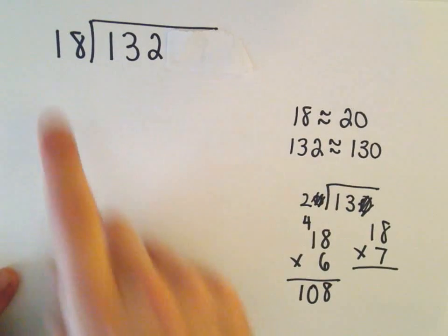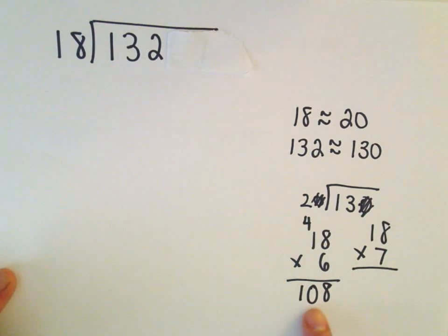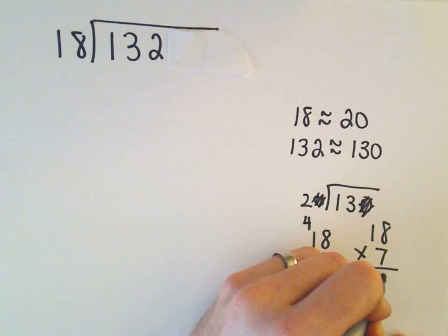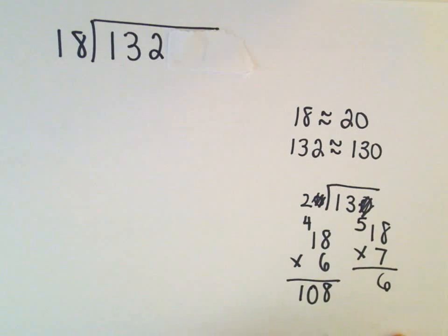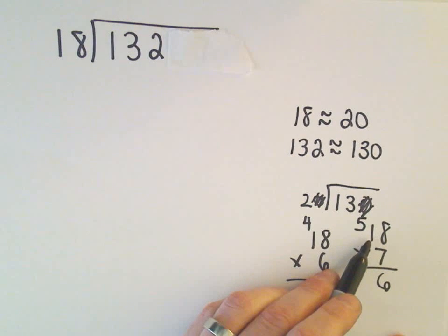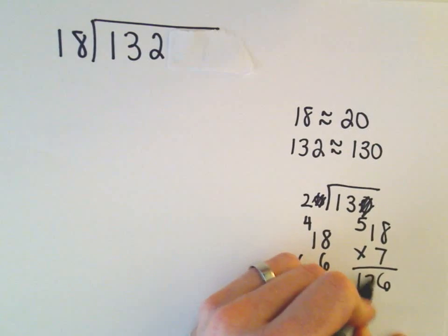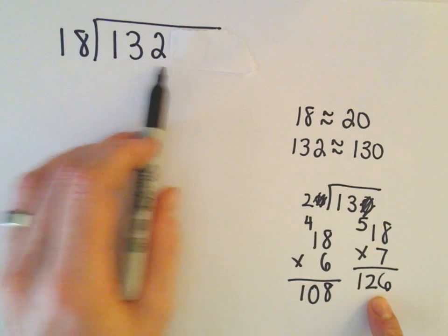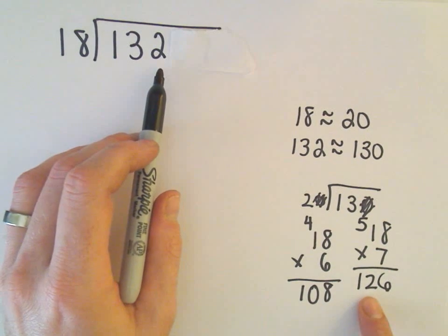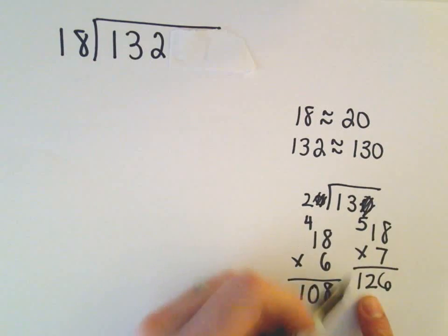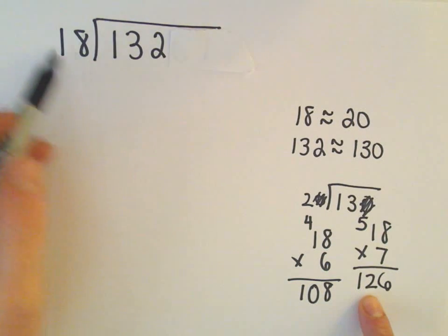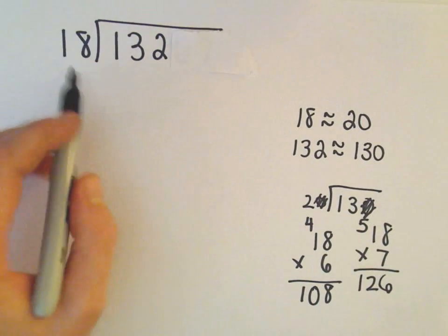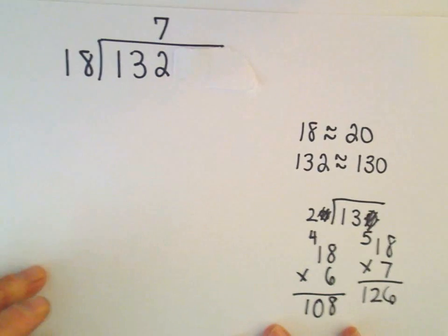So let's do 18 times 7. And again, we're basically just trying to get as close to 132 as we can, without going over. So 18 times 7, that's 56. So I'm going to keep the 6 and carry the 5. 7 times 1 is 7, plus 5 is 12. Well, hey, 126 is even closer to 132 than 108 was, and we still haven't gone over. You know, but 126 is certainly, if I multiplied by 8, it would be too big. I would be adding another 18.